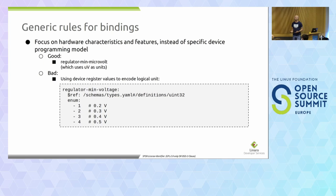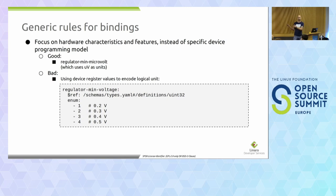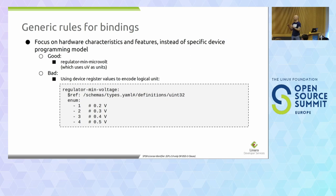Other rules: we focus on the hardware, not on the programming language of the device. A typical example is a voltage regulator with a minimum voltage — the property should be expressed in logical units, which are microvolts, not in enumerated values that map to voltages. It's much easier to read microvolts, and it's much more portable if you want to support another device type from the same family with a different mapping to voltages.